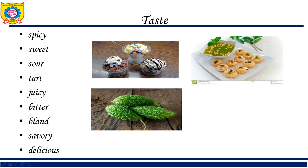You can use 'sour' or 'tart' to describe water balls — tart means sour and spicy. For example: 'I love to eat sour water balls' or 'the tart water balls are smelling quite savory.' Then you have 'juicy' — 'I love juicy fruits.'